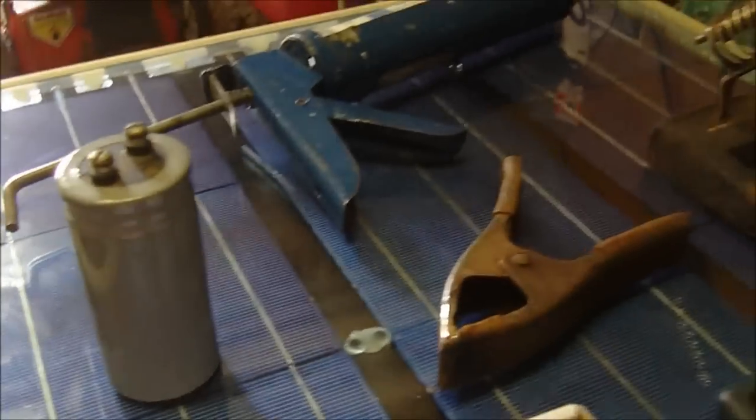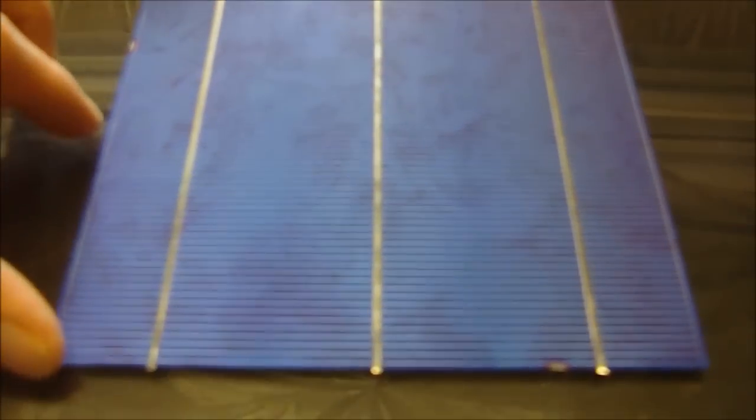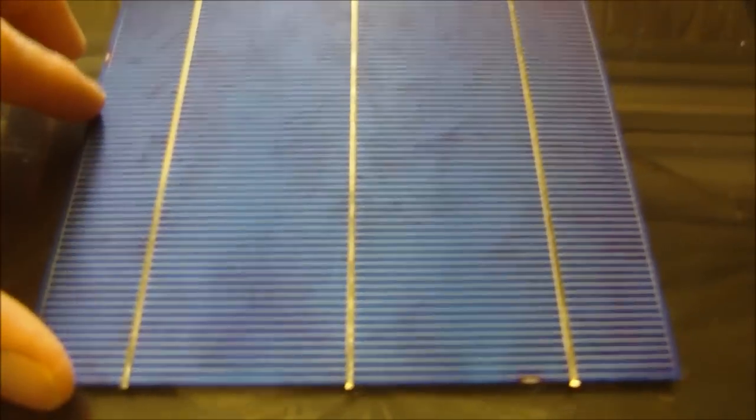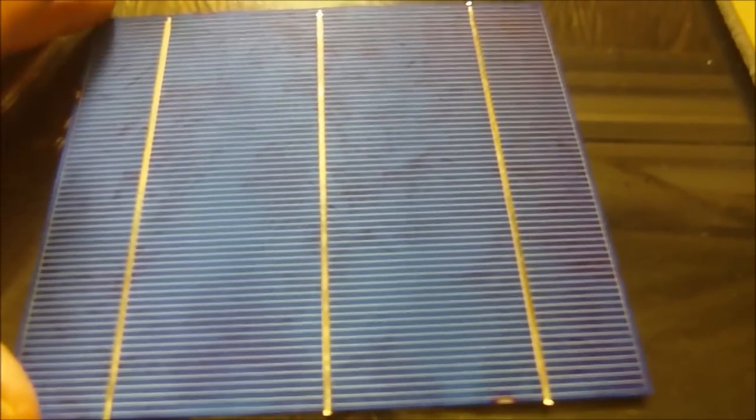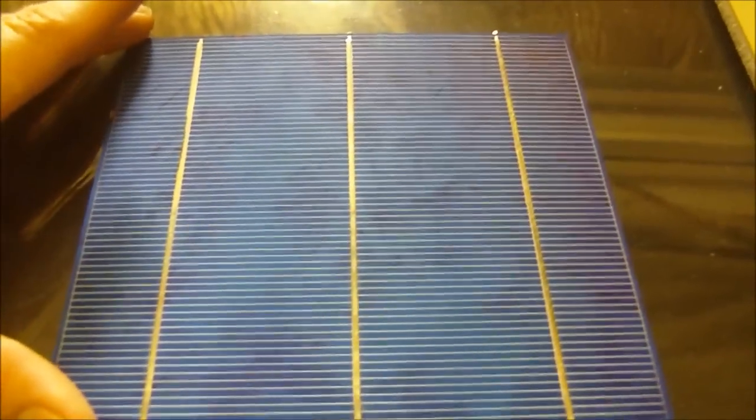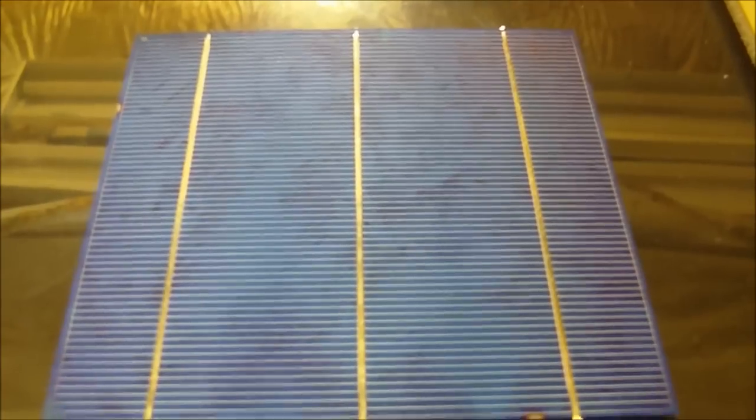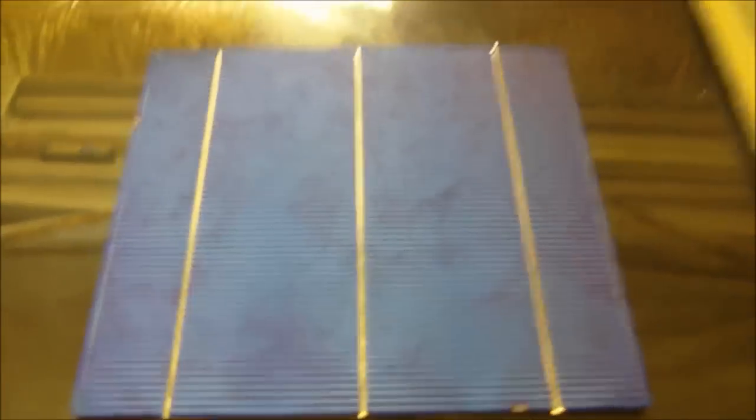If you want to build a panel this size that can charge a car battery, you're going to need smaller cells. If you have the half-size cells, the three by sixes, then you could do that, because each cell is half a volt. I recommend if you're going to build your first panel to start off with a smaller cell.